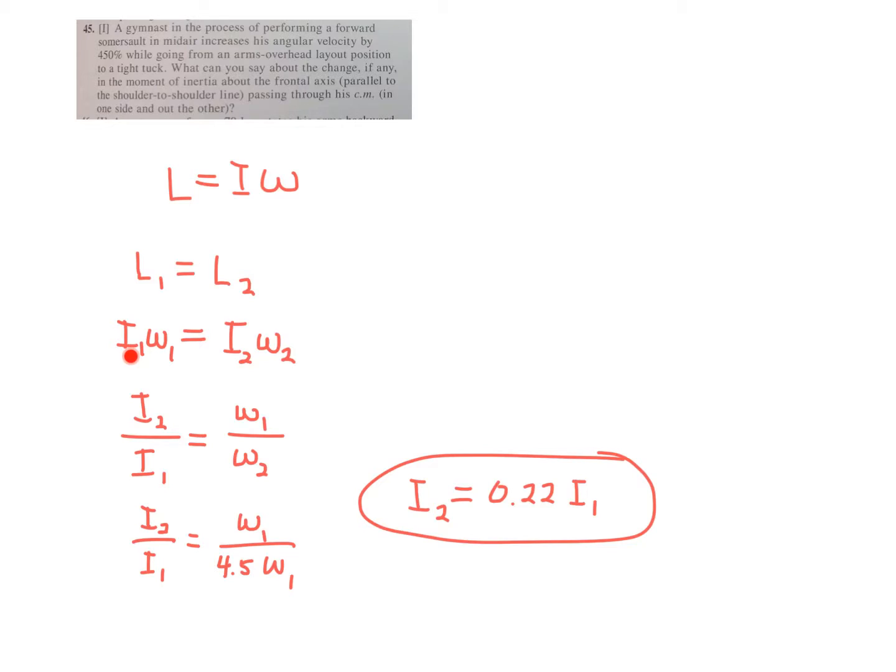And therefore, as I goes down by, say, a factor of seven, your omega will go up by a factor of seven. They're inversely proportional.